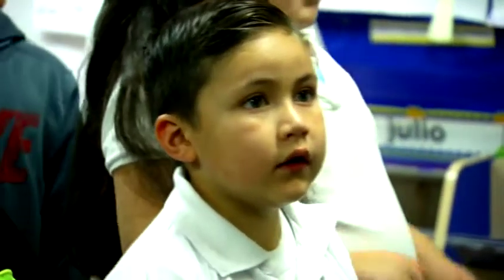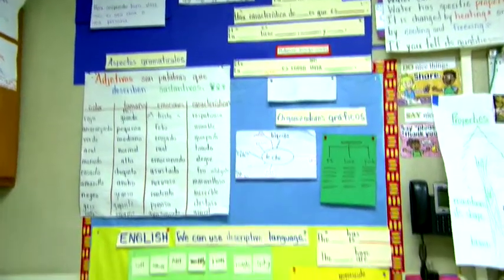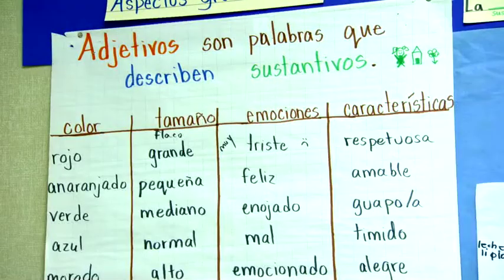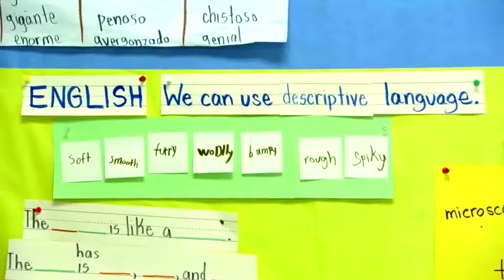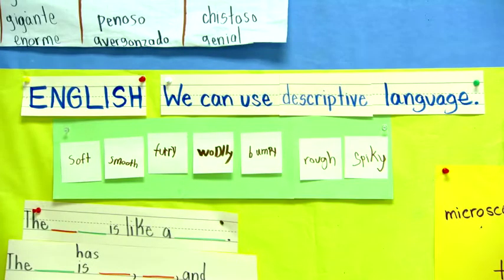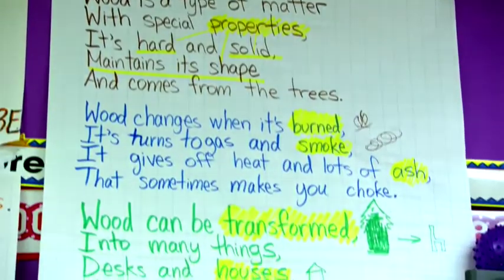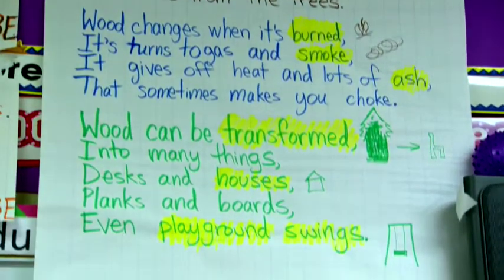They're working on the Next Generation Science Standards, looking at states of matter and its properties and how to describe and characterize it. The language function for this unit is the language of description. When working with students and instructing in a biliteracy model, it's important to use both languages as assets. It's important for students to be able to build knowledge in their strongest language — build in their home language so the unit is grounded, in this case in Spanish.